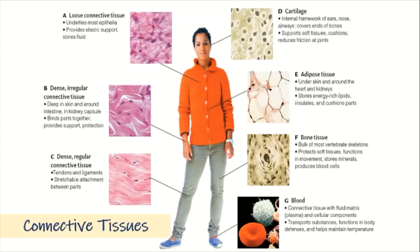Next, we have the connective tissues. We have loose connective tissue, which underlies most epithelia, provides elastic support, and stores fluid — for example, it can be found in your heart. Dense irregular connective tissue is found deep in the skin and around the intestine and kidney capsule. They provide support, protection, and bind parts together.